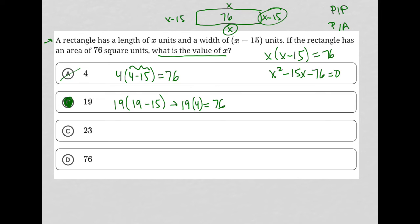So I switched gears here just to show you that there's another method here, plug-in answers. But of course, here we could have just as well figured out two factors of negative 76 that add up to negative 15 and solved that way.